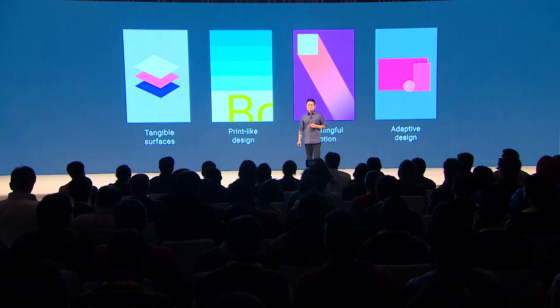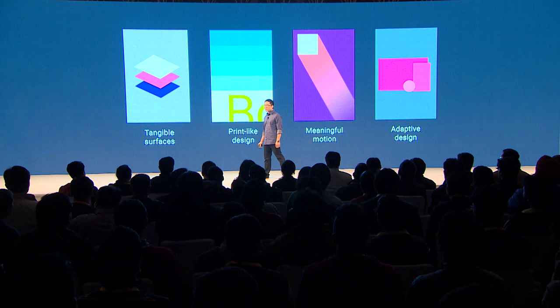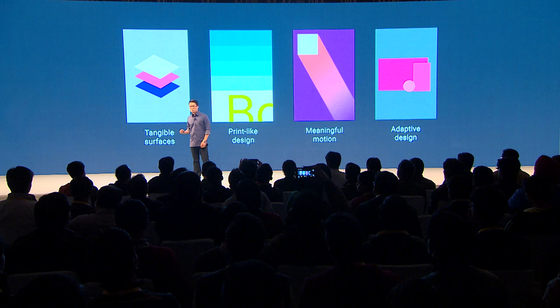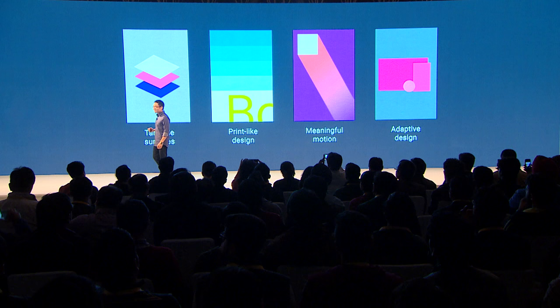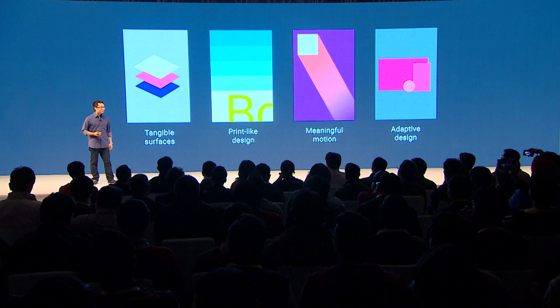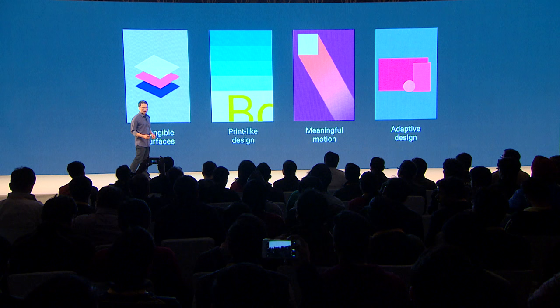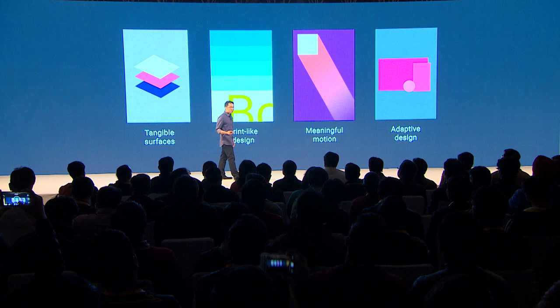There are four principles to building a Material Design app. First is about tangible surfaces, where your interaction cues are based on how physical objects work in the real world. Second is about print-like design, where your content and colors are bold, graphic, and intentional — refined to fit the look and feel of your brand. Third is about using meaningful motion to draw the user's attention and to provide a sense of continuity as they move from one screen to the next.